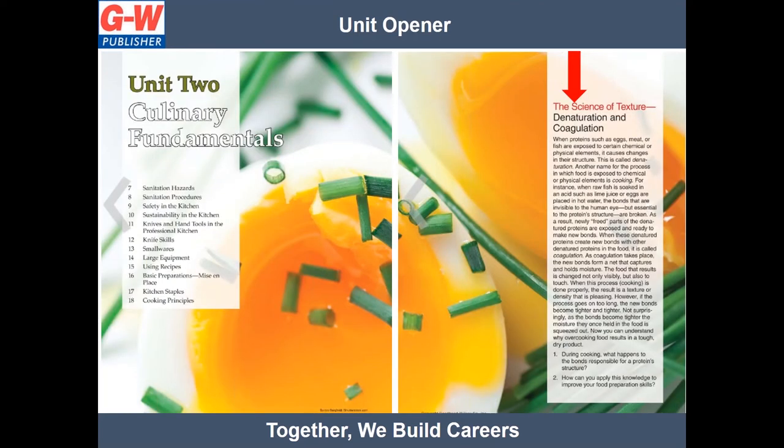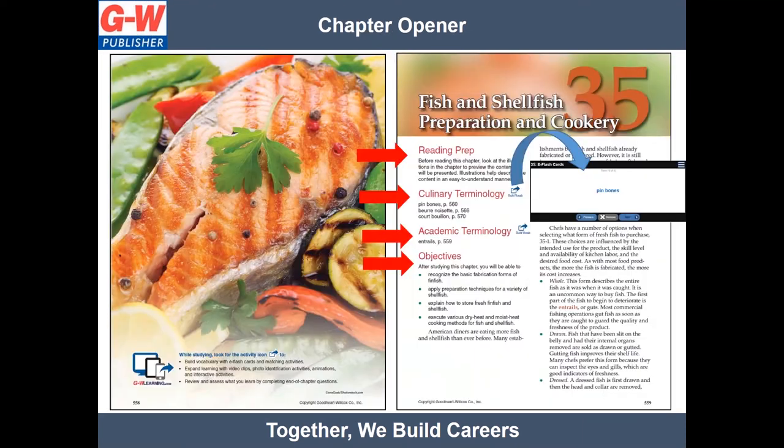Each of the five units begin by briefly describing fundamentals of food science. These spreads provide a brief explanation of the concept and how it relates to culinary success, along with questions to assess understanding. Units and chapters open with colorful images to grab student attention. Content is broken down into accessible chunks for easy comprehension. Every chapter includes a reading prep activity, culinary terminology, academic terminology, and learning objectives.